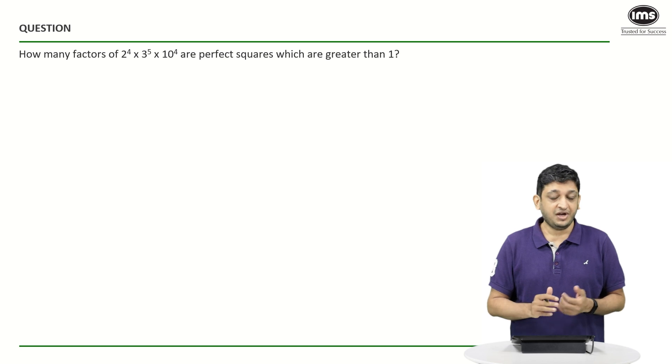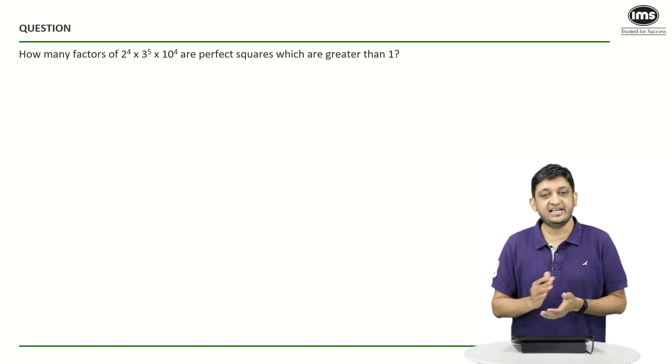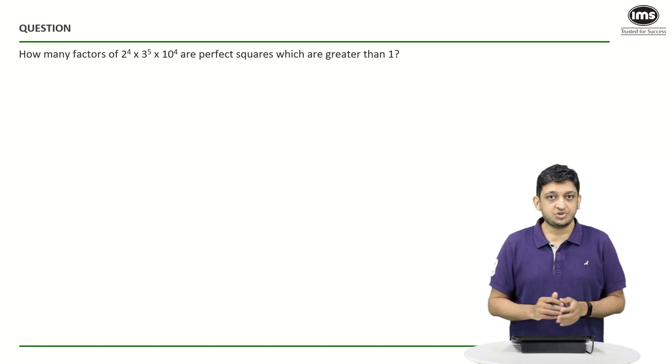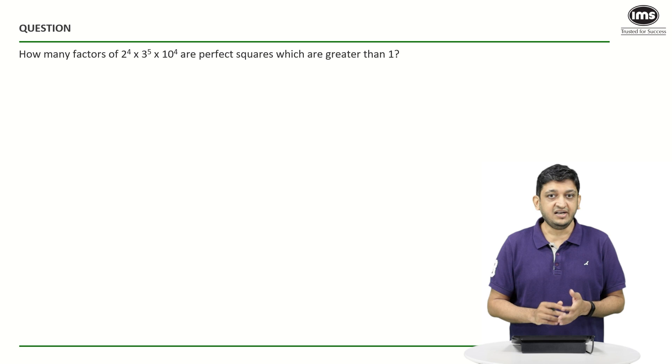The question that we have here is rather straightforward. You have to figure out how many factors of the given expression exist such that they are perfect squares and they are greater than 1. Now this is a TITA question, meaning that you are expected to type in the answer, so you have not been given options and there is a good chance that you might make a small mistake which we will have a look at.